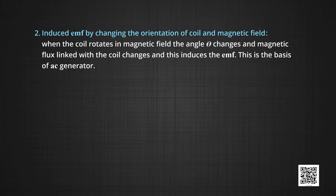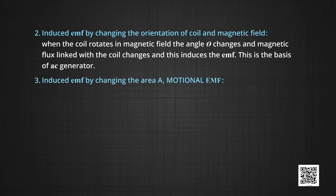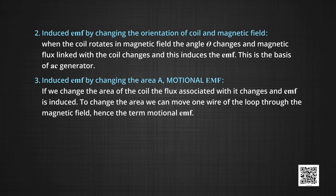When we change the orientation — that is, when the coil rotates in the magnetic field — the angle θ changes, the magnetic flux linked with the coil changes, and this induces the EMF. This is the basis of the AC generator. Induced EMF by changing the area A is called motional EMF. If we change the area of the coil, the flux associated with it changes and EMF is induced. To change the area, we can move one wire of the loop through the magnetic field, hence the term motional EMF.